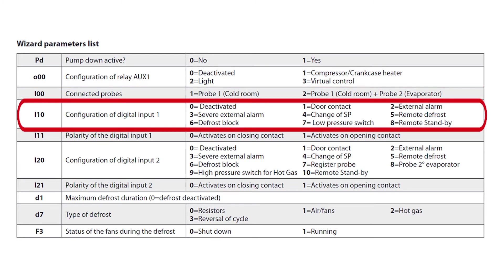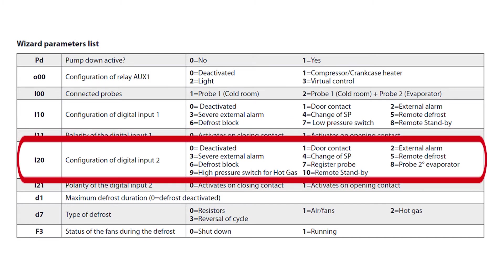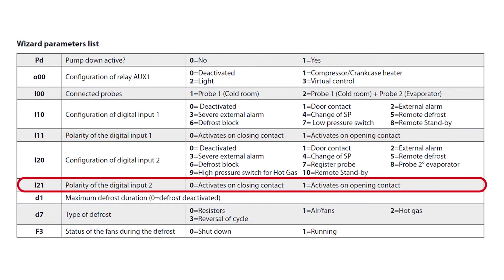I10 is 0, which means that digital input 1 is deactivated, as noted in PD. This means that we do not need to have a low pressure control signal there, because the controller is not controlling the compressor. I11 is 0 but is not relevant, as this function is deactivated. I20 is also deactivated, but we could have used it for any number of functions by selecting the desired parameters — such as 1 for door contact, which would tell us if the door was left open. I21 determines whether the signal activates on an opening or closing contact if we were to use it.